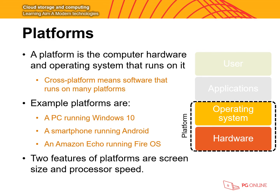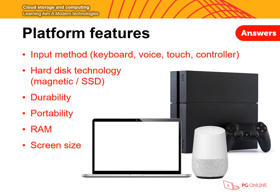Let's look at platforms. A platform is the computer hardware and the operating system that runs on it. When we talk about hardware we are looking at things like mice, keyboards, or touchscreen inputs. More recently, systems are using voice commands. Examples of platforms and operating systems include Windows 10 running on a PC or laptop, Android running on a smartphone, and an Amazon Echo device running the Fire operating system. We will now look at features such as screen size and processor speed that will impact which platform you pick.